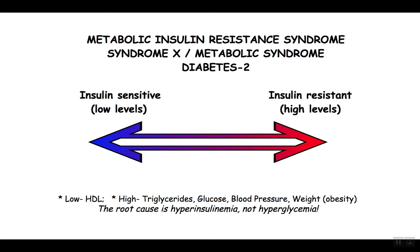So metabolic insulin resistance syndrome — otherwise known as Syndrome X, otherwise known as metabolic syndrome, otherwise known as type 2 diabetes — is something we ought to think about as a big syndrome with a spectrum. That spectrum of severity really depends on whether there is insulin sensitivity or insulin resistance. Insulin sensitivity is manifested in low levels of fasting insulin, and insulin resistance is manifested with high fasting insulin levels.